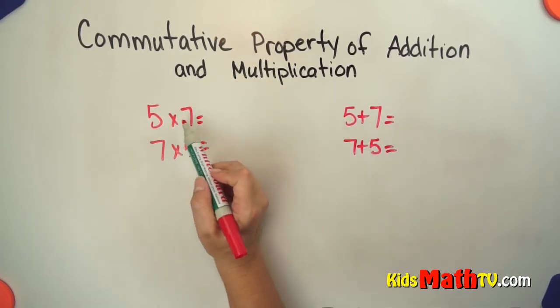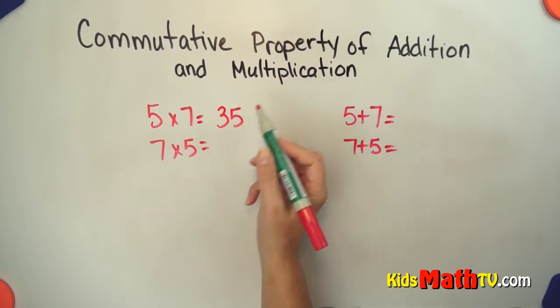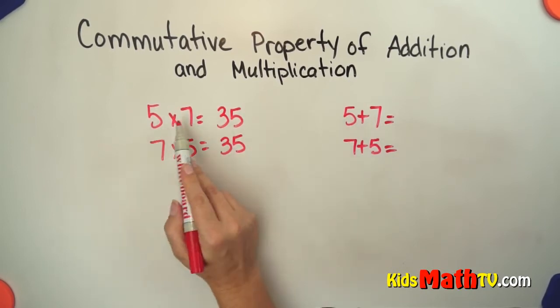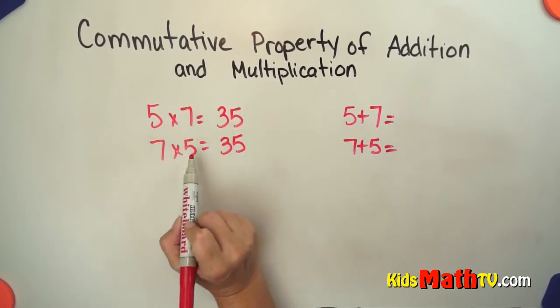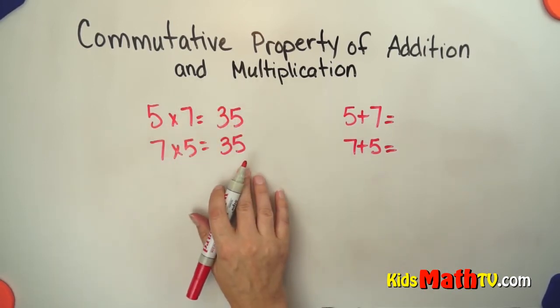So 5 x 7, 5 groups of 7 is 35. 7 groups of 5 is also 35. So 5 x 7 is the same as 7 x 5. It's commutative, you can flip it around, you can move them around and they're still the same answer.